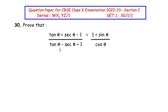Hello and welcome to my channel. In this video we are going to solve the 30th question from CBSE class 10 examination, 2022-23, section C, where each question is of 3 marks. The 30th question is from the introduction to trigonometry chapter. Prove that tan θ + sec θ − 1 over tan θ − sec θ + 1 is equal to 1 + sin θ over cos θ.